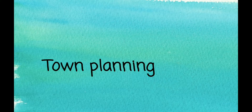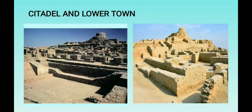Moving on to town planning: many cities were divided into two main parts — the citadel and the lower town. The citadel was usually located to the west on high ground and has been identified as an acropolis, meaning a high fortified area. Big brick platforms formed the foundation of buildings in the citadel to protect them from floods. This citadel contained important public buildings like granaries and worship areas. Historians believe the ruling class occupied the citadel, while the common people occupied the lower town.